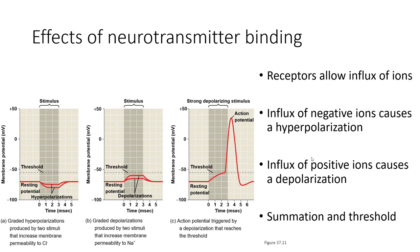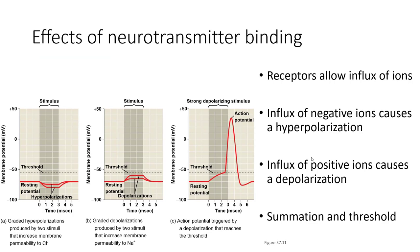There could also be depolarization produced by these neurotransmitters binding to the receptors, causing a certain amount of sodium to go through. If this sodium goes through, this will depolarize it. Putting positive charges through this membrane will cause the resting potential of negative 70 to be changed to, say, negative 60 when there is a depolarization caused by a neurotransmitter binding to a receptor and causing an influx of sodium.